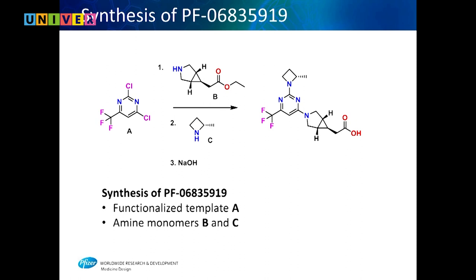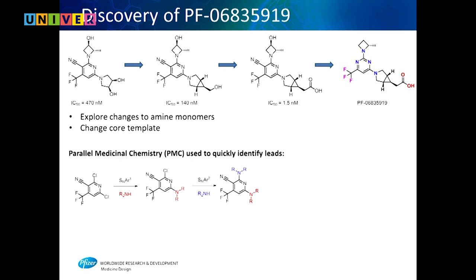It's a quite simple molecule. This is what we call a template — functionalized for reaction at these two chlorines. You bring in amine B and attack at this site first, then bring in compound C and attack it at the second point, ending up with this compound after hydrolyzing the ester. The core piece here is the hardest part to make, but we've figured out a good way. You have a core template with reaction sites and monomers you bring in and react.